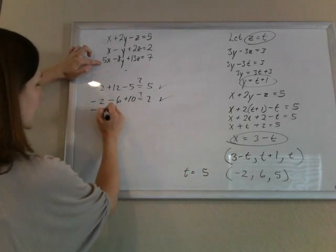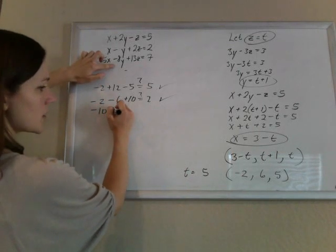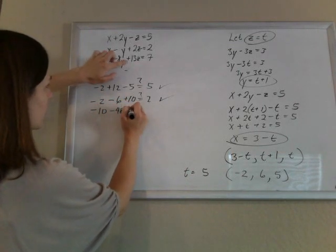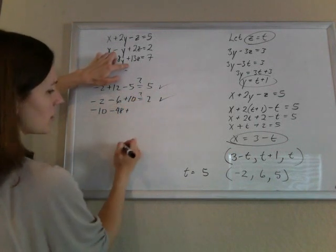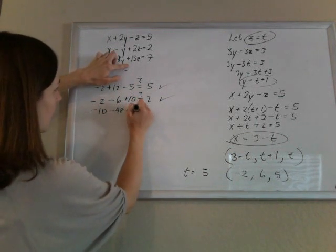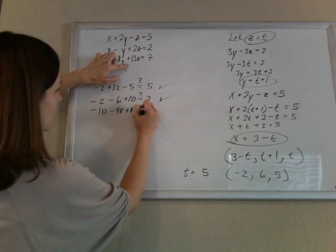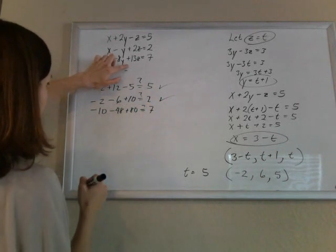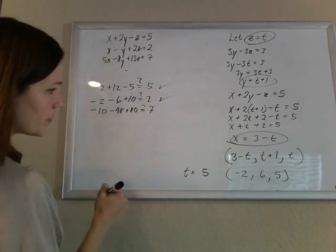x is negative 2, so this is negative 10. Minus 48. Plus 13 times 5. 80. Does this equal 7? Oh crud. No.